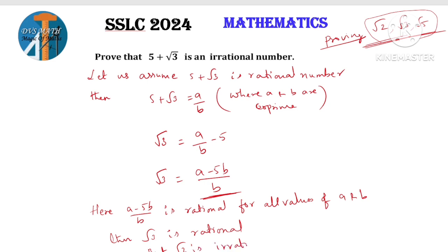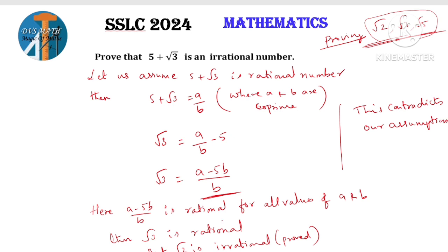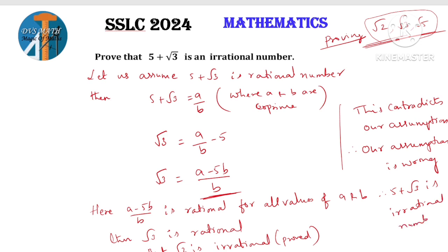But root 3 is irrational — proved. So this contradicts our assumption. This contradicts our assumption. Therefore, our assumption is wrong. Therefore, 5 plus root 3 is an irrational number.